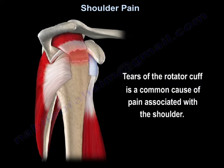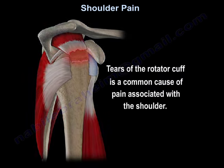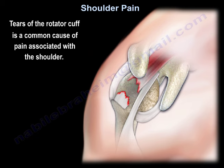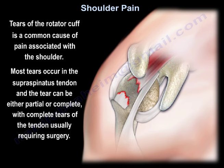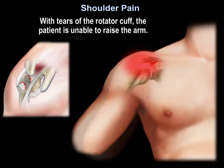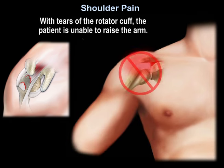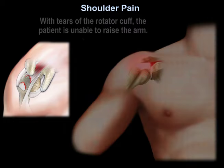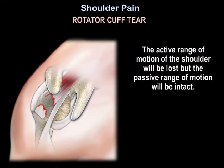Tears of the rotator cuff are a common cause of pain associated with the shoulder. Most tears occur in the supraspinatus tendon and they can be either partial or complete, with complete tears of the tendon usually requiring surgery. With tears of the rotator cuff, the patient will be unable to raise the arm. The active range of motion of the shoulder will be lost, but the passive range of motion will be intact.